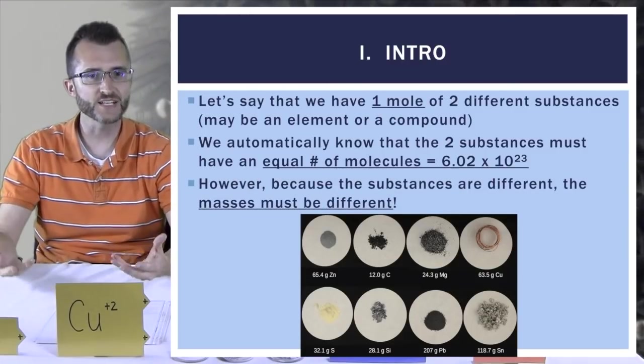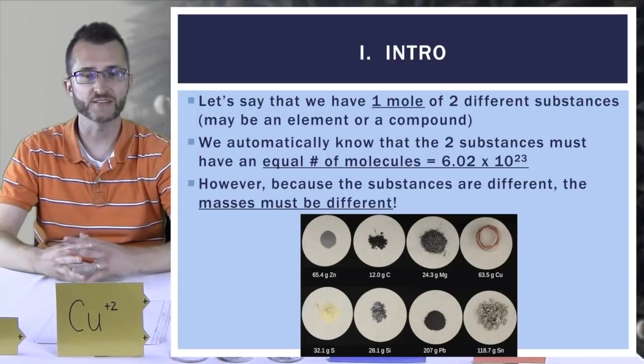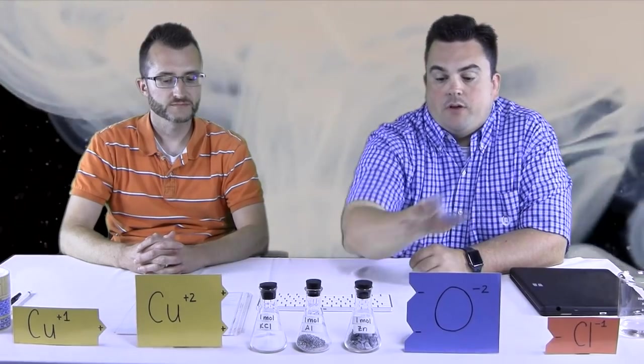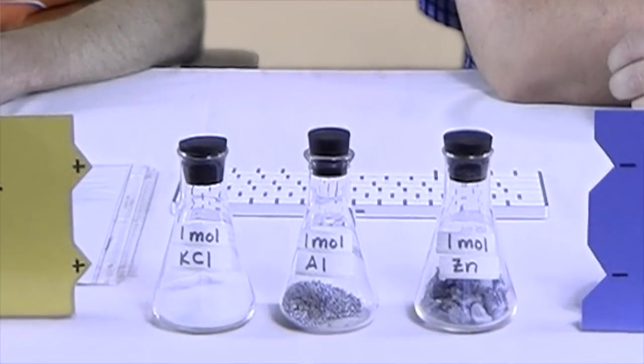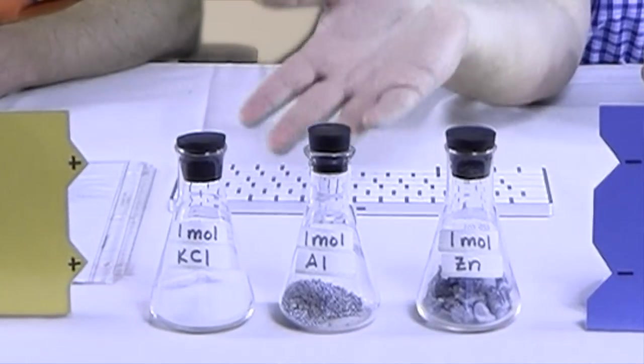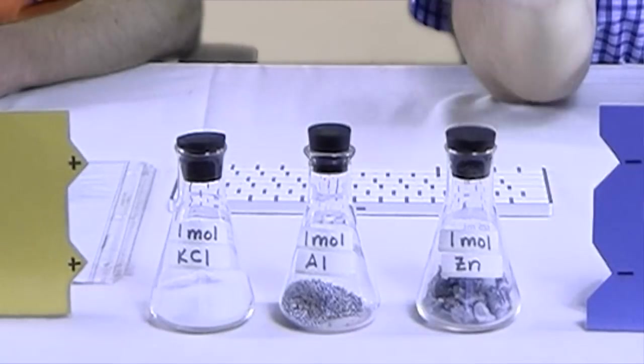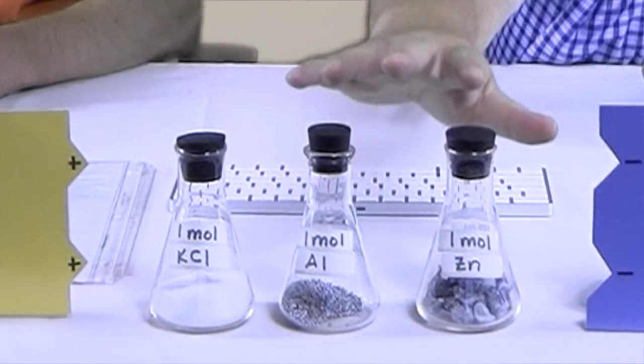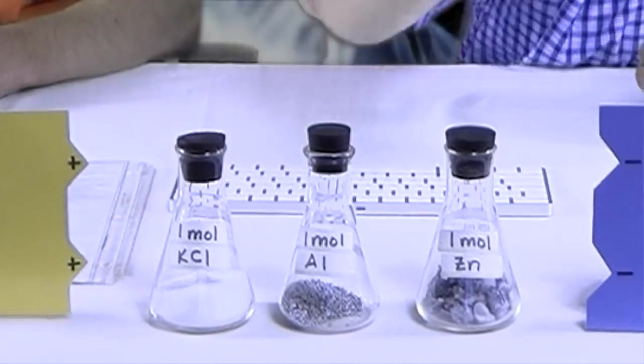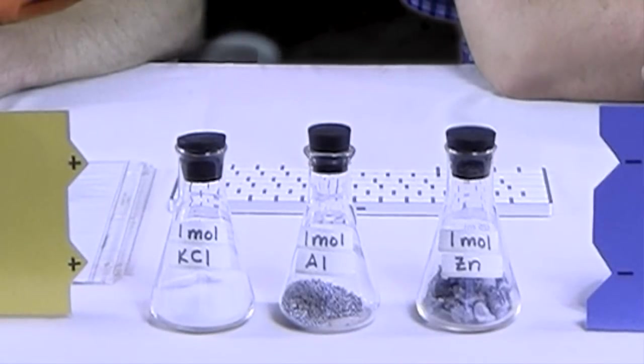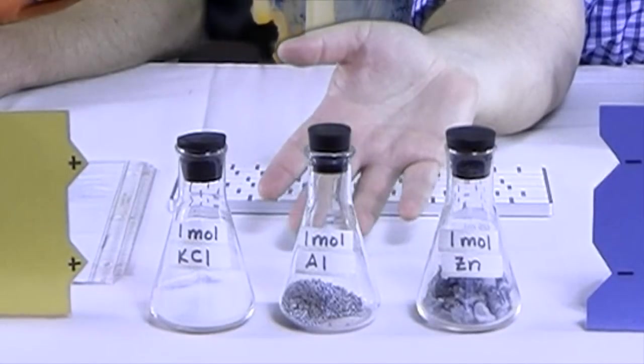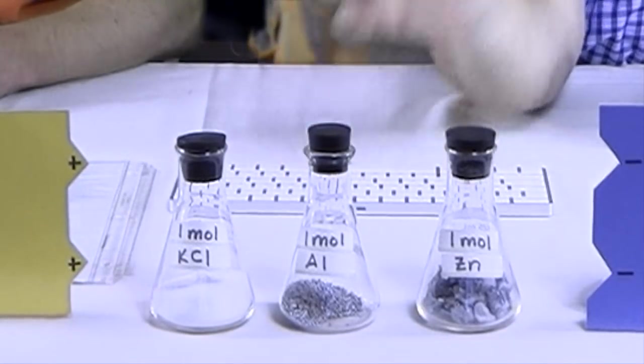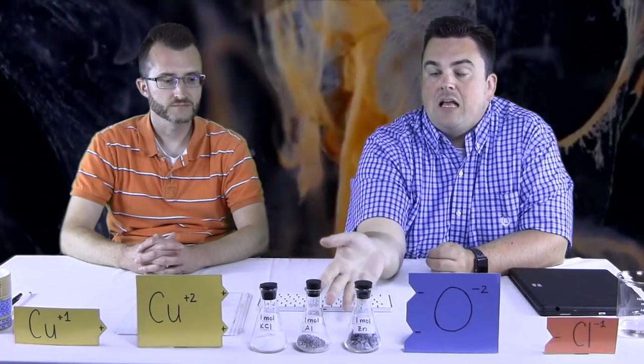However, because the substances are different, the masses must be different. So as you can see up here, we have three different samples of matter. We've got one mole of zinc, one mole of aluminum, and one mole of potassium chloride. Now, each one is one mole, which means they all have the same number of particles, whether they be atoms of these two metals or compounds here in KCl. It's all one mole. But looking at the samples themselves, you can see they're different sizes and they have different masses. So even though they're all the same number of particles in one mole, they're all going to have a different mass.